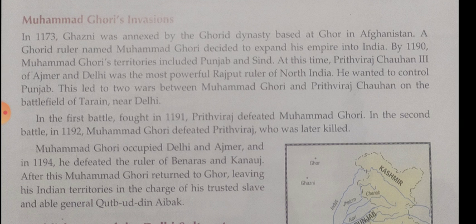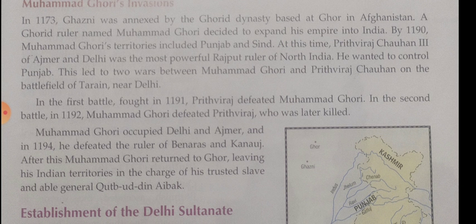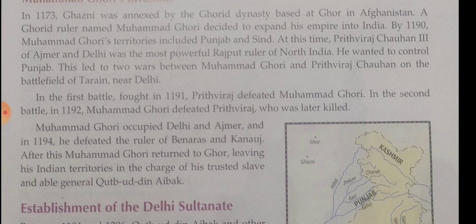Next we discussed about the Khalji dynasty. The Khalji dynasty was established by Jalaluddin Firoz in 1290. In 1296, Alauddin murdered him and proclaimed himself Sultan. Alauddin Khilji was the ablest ruler of the Khalji dynasty and conquered many areas in India.